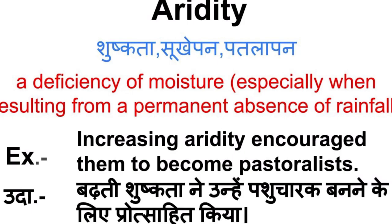Aridity — yonin, Shushakta, Sukhepan, Patalapan. In English, its meaning is a deficiency of moisture, especially when resulting from a permanent absence of rainfall.